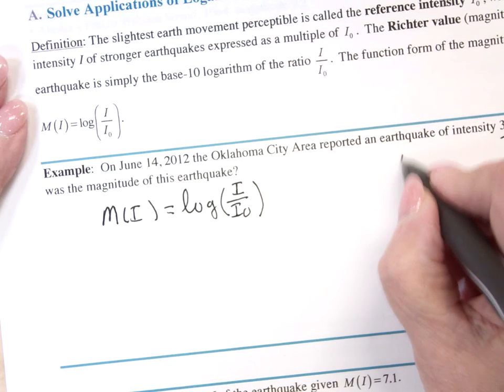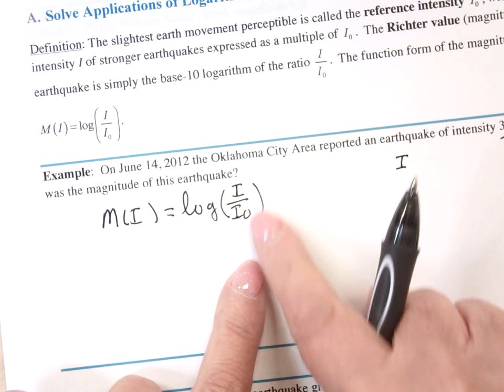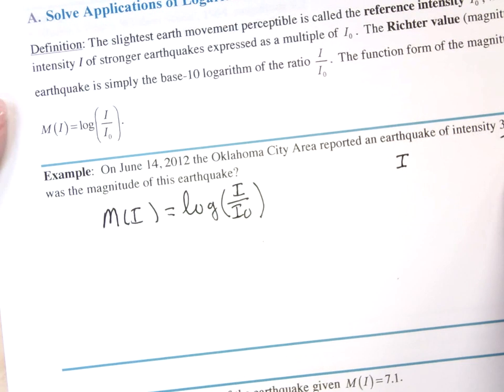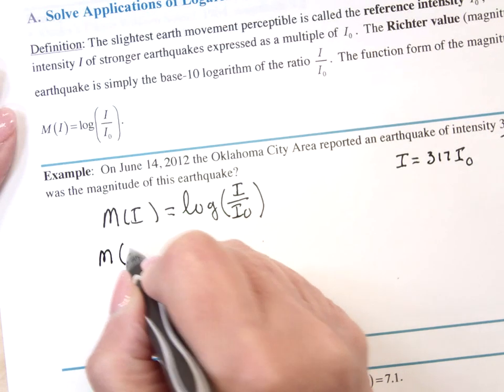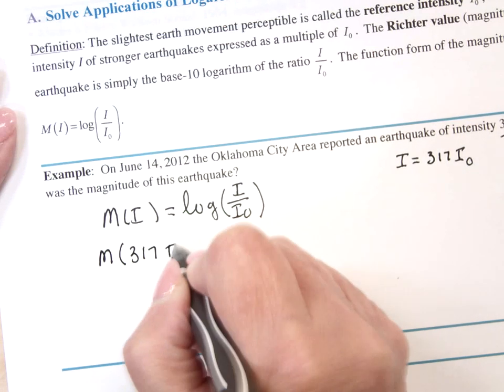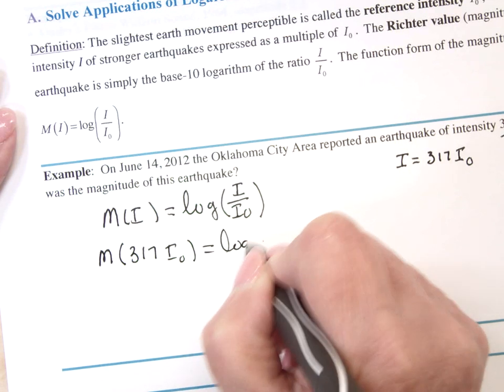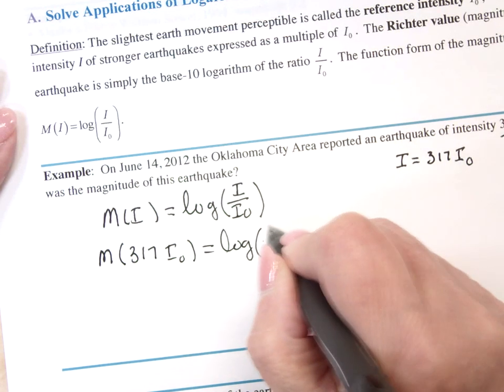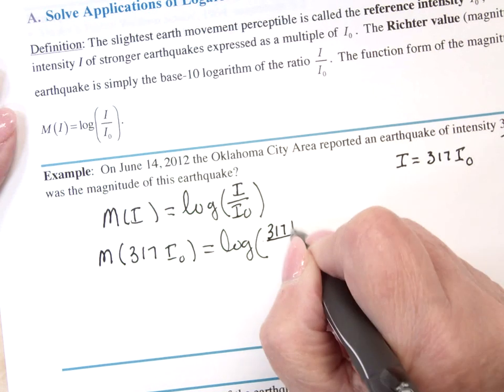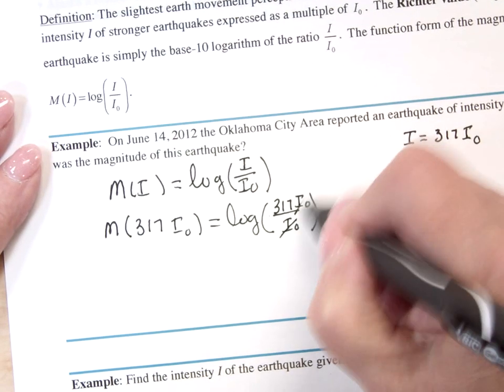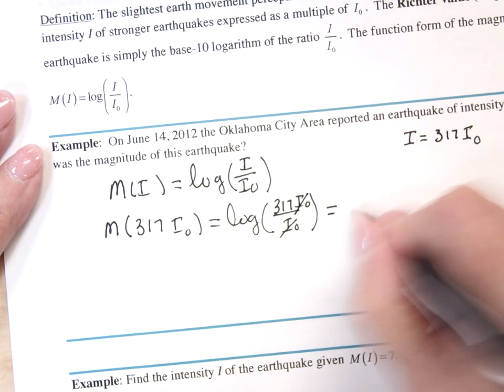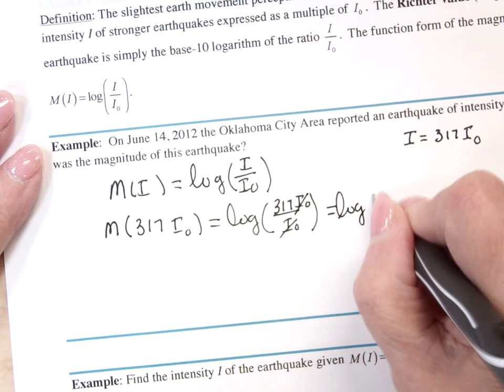So they gave me that I. I have two variables. I have I and I sub zero. So they gave me I, and it is 317 I sub zero. So I want M of 317 I sub zero, which is the log of 317 over, or I sub zero over I sub zero. So they say it's given to you in a form of I sub zero. So I sub zero is reduced out. This is the log of 317.